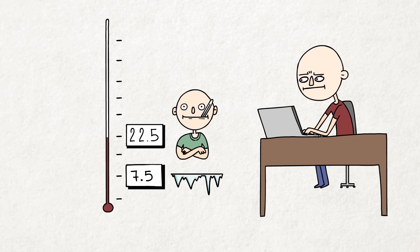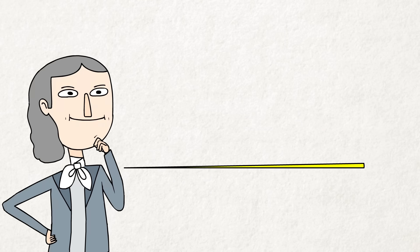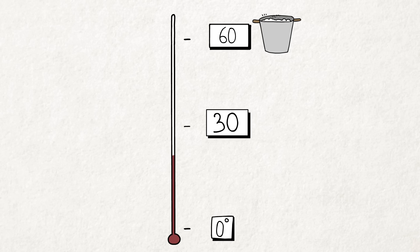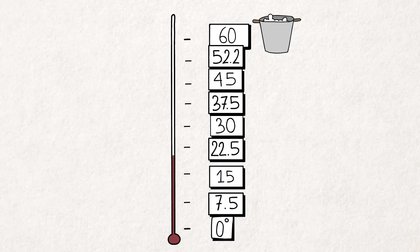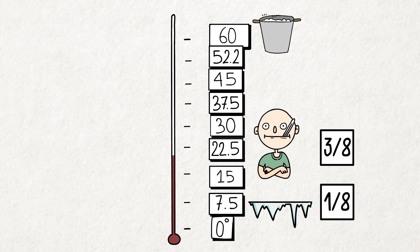Now, this might seem odd, until you consider that Romer wanted the boiling point of water to be 60 degrees. As an astronomer, he had experience dividing things by 60. So if you take this scale, divide it in half, in half again, and in half once more, you find the freezing point of water one-eighth up the scale and human body temperature three-eighths up the scale.